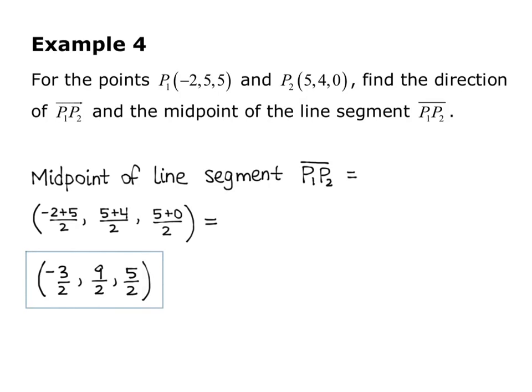Simplify that and I get a midpoint of negative 3 halves, 9 halves, 5 halves. So notice that the midpoint is actually a point in space, so I use the parentheses, as opposed to the direction vector that we found. I either use i, j, and k, or the angle brackets for vectors.